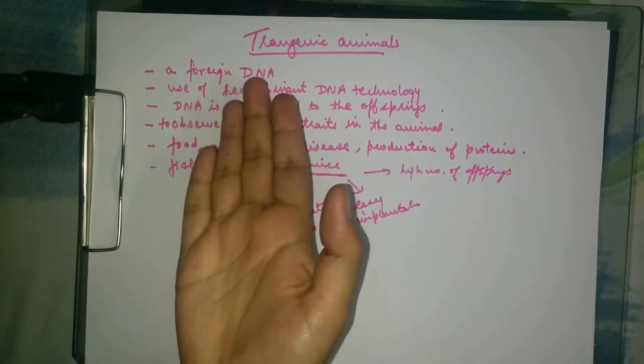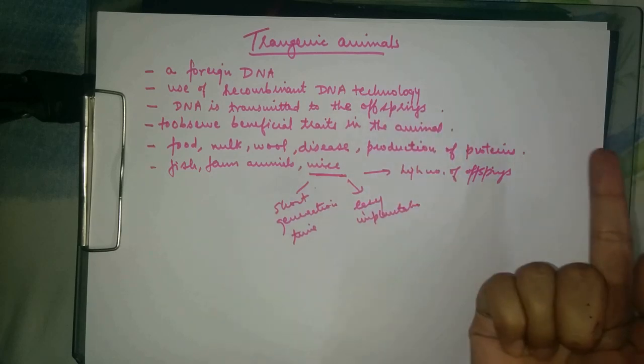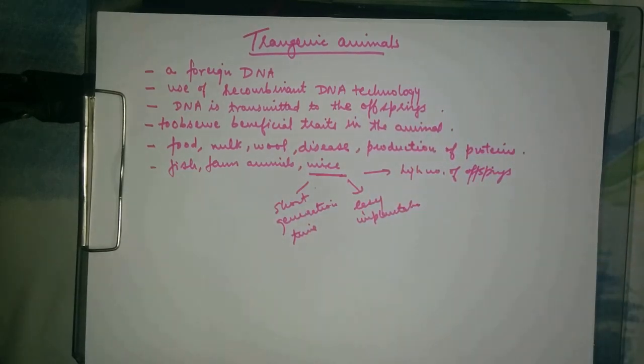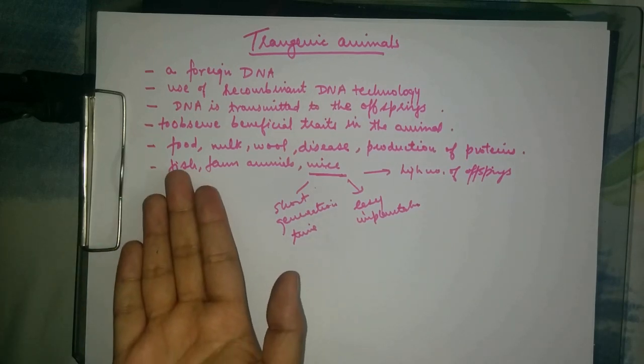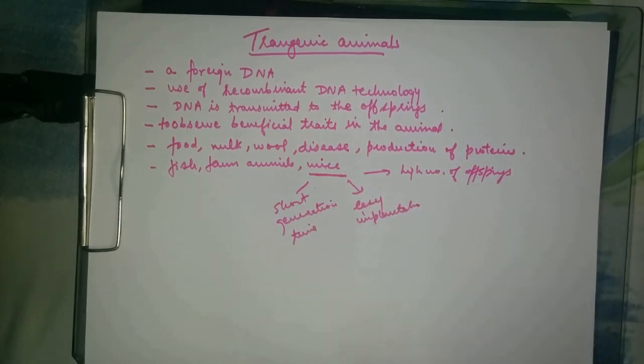To sum up, we insert foreign DNA into animals to observe specific characters. We use recombinant DNA technology, and the DNA is transmitted to offspring. We do this because we want food, milk, wool, disease resistance, production of proteins, etc. For doing transgenesis, we use several animals.